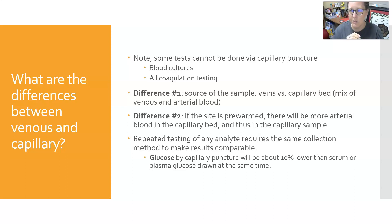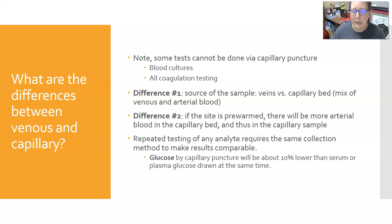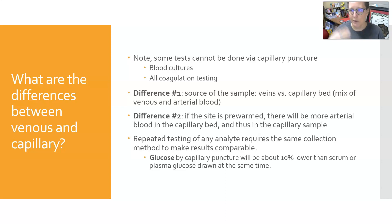For capillary testing such as whole blood glucose monitoring, it's whole blood versus serum or plasma, so there are differences in the type of testing. If the site is pre-warmed — which is often recommended for capillary punctures — there will be more arterial blood in the capillary sample. For repeated testing of any analyte, it's best to use the same collection method to keep results comparable. A glucose by capillary puncture will be about 10% lower than a serum or plasma glucose drawn at the same time.